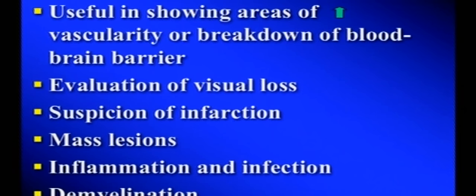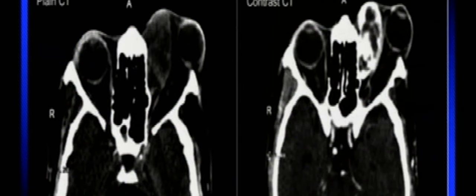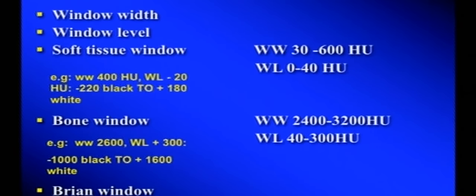In CT of the orbit, IV iodinated contrast is not very frequently required. Different tissue windows — soft tissue window, bone window, brain window — can be created depending on the area of interest. On soft tissue window, orbital soft tissues are beautifully delineated but bones show no differentiation — everything appears white. On bone window, bony details are nicely delineated but soft tissues become uniformly dark — you cannot differentiate muscle from lens or orbital coat.